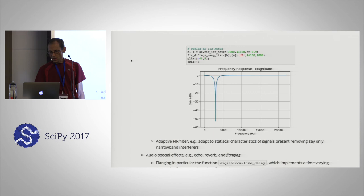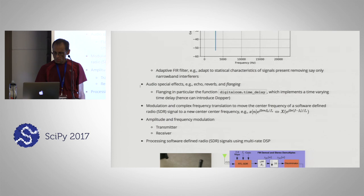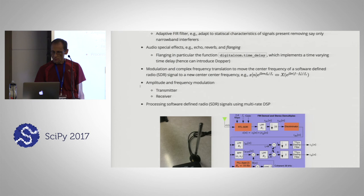We'll build some notch filters so we can excise interfering signals and play with that in another lab experience. I wanted to do something with adaptive filters but I dropped that one. We will look at flanging as an audio special effect and have that come through PyAudio — I could have done echo or reverb, but flanging is an exciting one. We'll use something from the digital comm module which implements a time-varying time delay.